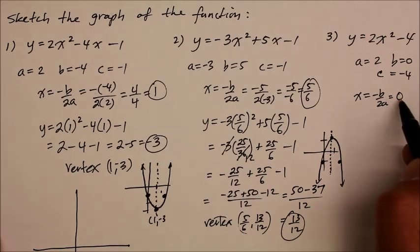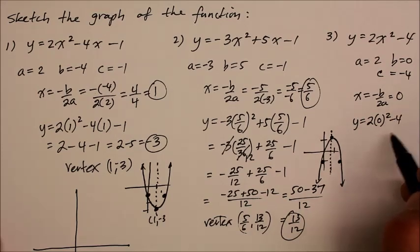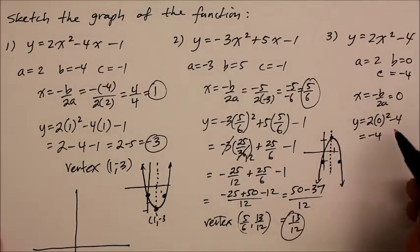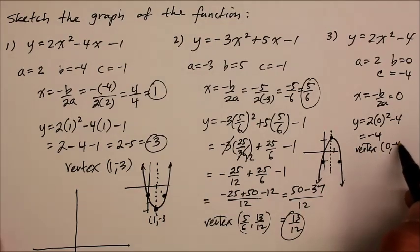How do you find the vertex? Well, plug it back into the function. Y equals 2 times 0 squared minus 4, so y is simply negative 4. So the vertex is coordinate 0 and negative 4.